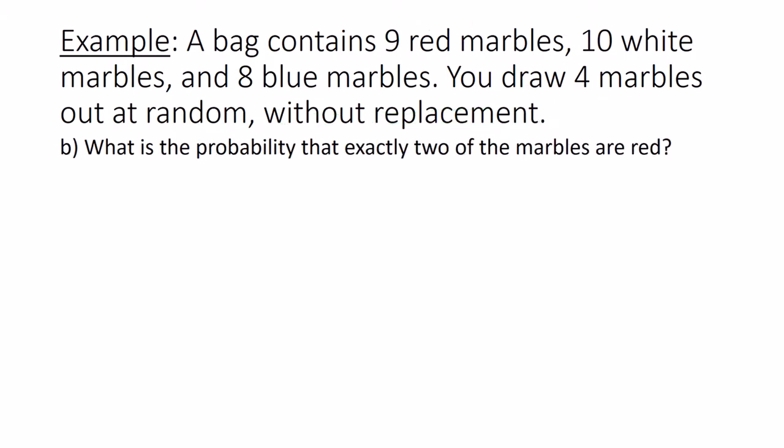Part B. What is the probability that exactly two of the marbles are red? So we're looking at all the outcomes of four marbles where two of them are red. So one possibility would be red, red, not red, not red.